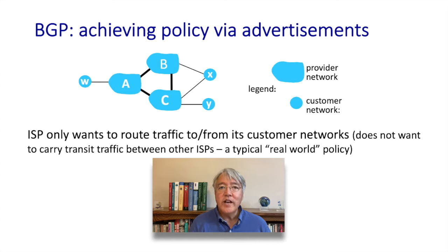Here's another policy-based path advertisement quandary. Look at Network X — it's a customer of both networks B and C, which is called being dual-homed. As a customer attached to both B and C, it has no desire to route traffic between B and C, even though it could. So X doesn't tell B that it has a path to C, and doesn't tell C that it has a path to B. As a result, X would never carry transit traffic between B and C.